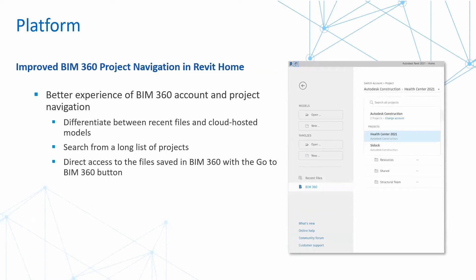Right below recent files you'll see something called BIM 360. When you select it, you can choose your hub, your project, and then the file you would like to work with. With all of this available, there is also an easy access help link — so just in case you get lost, you can always click on the help link and it will guide you from there.